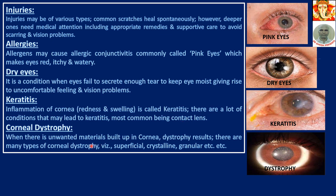Corneal dystrophy occurs when there is unwanted material buildup in the cornea. There are many types of corneal dystrophy, namely superficial dystrophy, crystalline dystrophy, granular, etc. These details are not much required here.